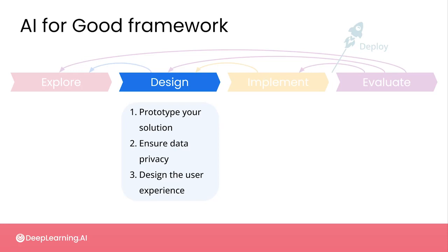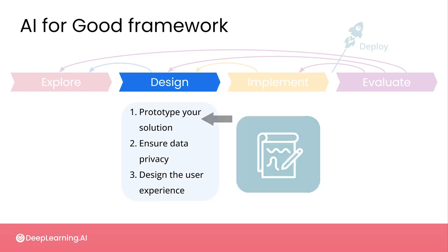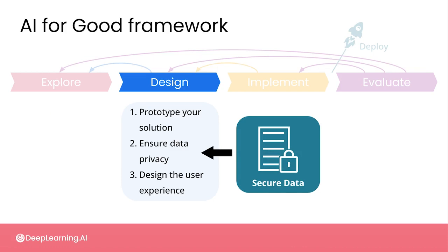In the design phase, the steps you'll take are first to prototype your solution, which involves looking more closely at your data and testing out some models. At the same time, you'll also be thinking about how you're going to address data privacy and data security issues. Whenever you're dealing with data that includes information about people or property, you have to be very deliberate about how you're going to handle that data at all stages of your project in order to ensure that it remains secure and private.